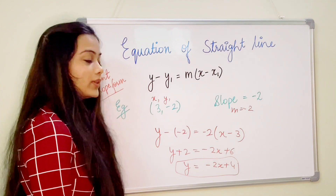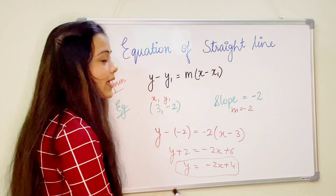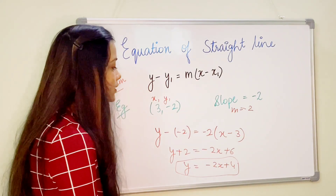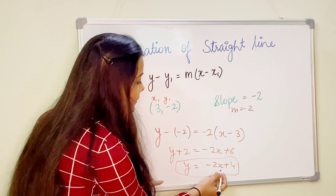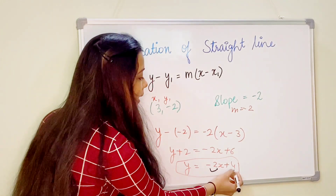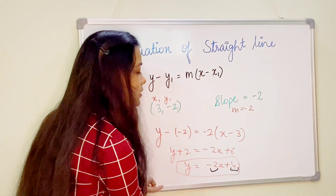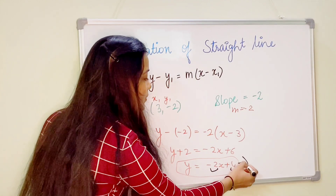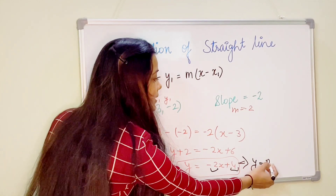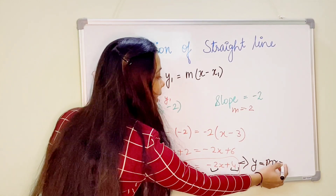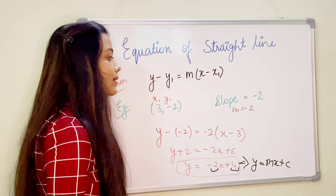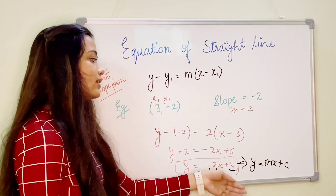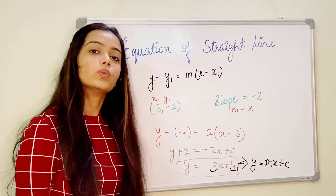The form we just obtained is the slope-intercept form, wherein the slope is minus 2 and the intercept is 4. This is expressed as y equals mx plus c, where the slope equals m and the intercept equals c.